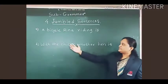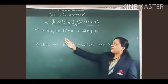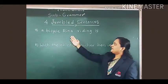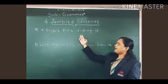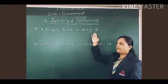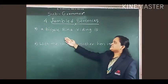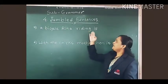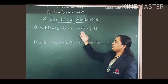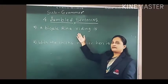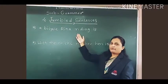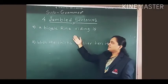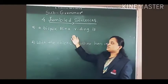Firstly, let's see here. Example A: 'A bicycle Rina riding is.' We can't get proper meaning from this sentence. This means we can't get proper meaning.